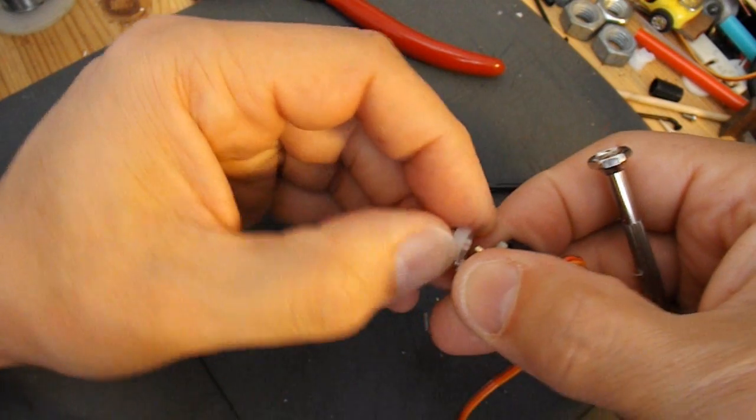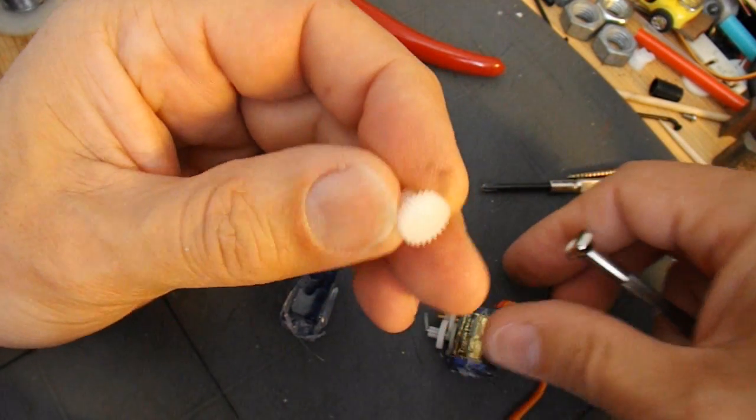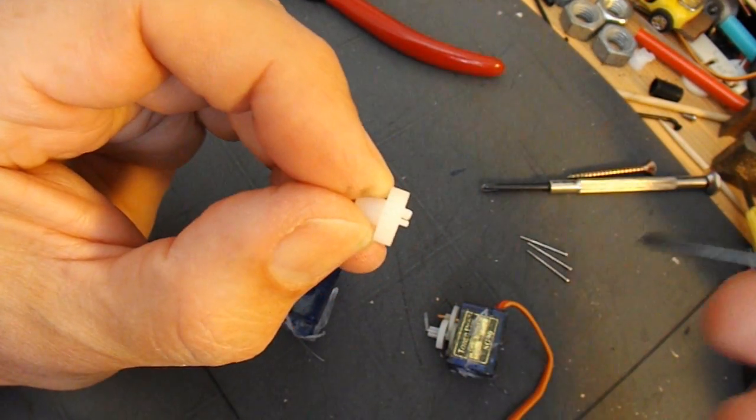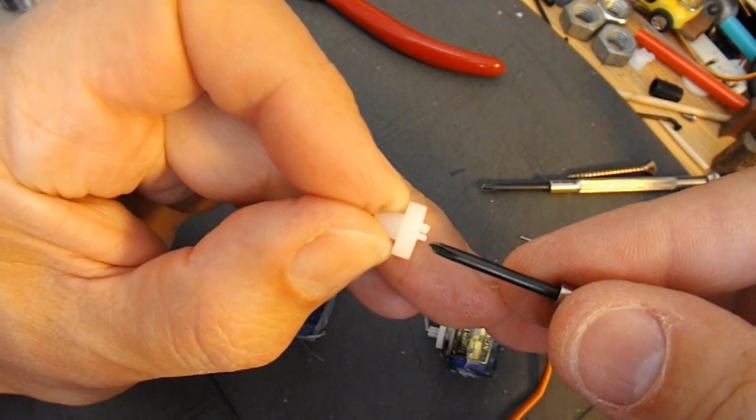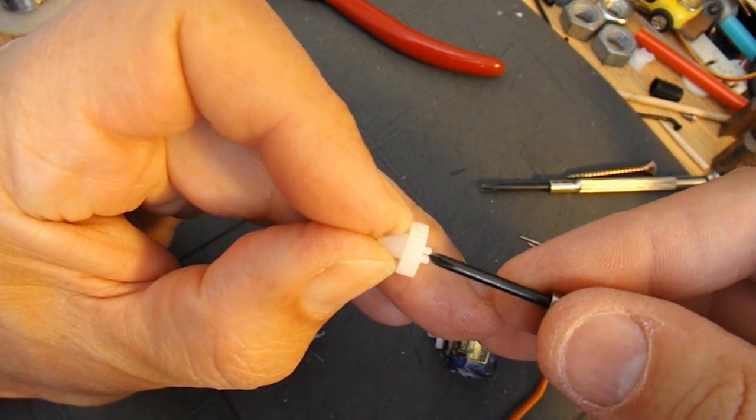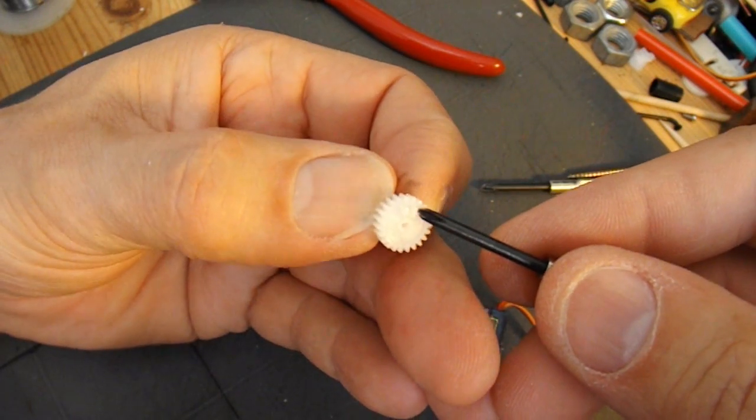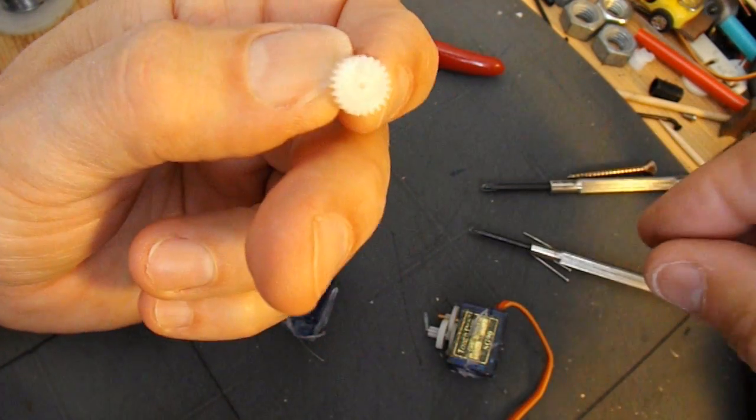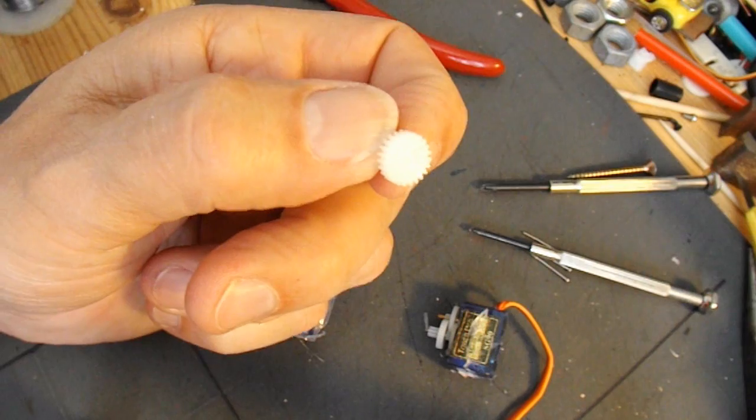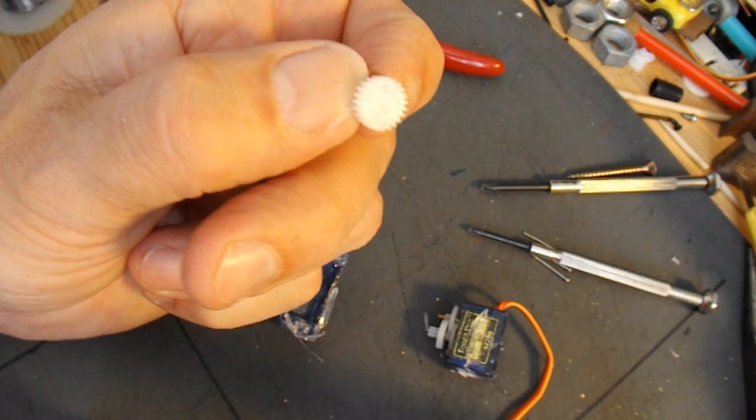So if I ease that off, now I can see it just there. So I need to cut that off, which you can do with a knife or a pair of cutters.